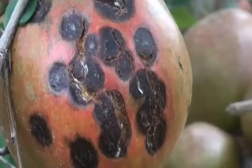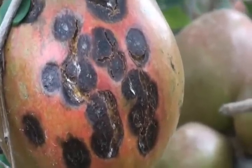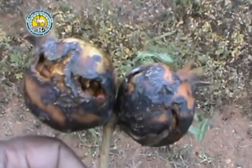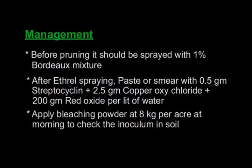On the fruits, spots are dark brown, irregular, and slightly raised with an oily appearance, which split open with L-shaped cracks. Under severe cases, for management, before pruning it should be sprayed with 1% borax mixture. After ethereal spraying or defoliation, paste or smear with 0.5 gram streptocycline plus 2.5 gram copper